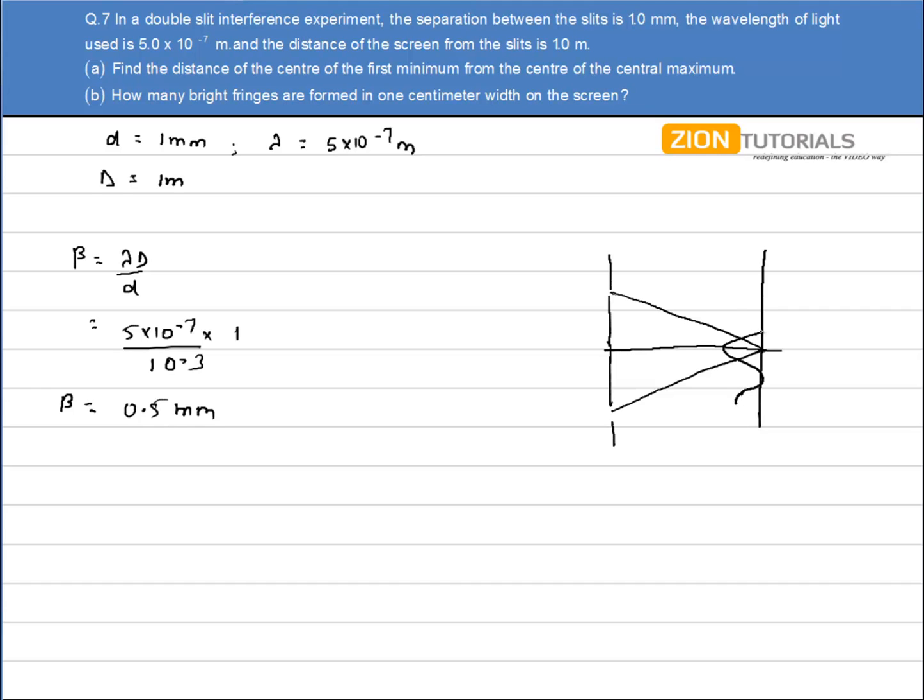So this is the central maxima at the center at point O, and the first minima will be at point A and at point B.